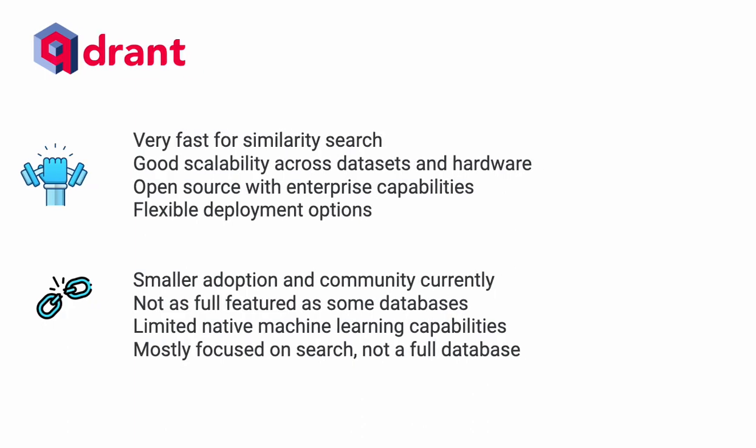The last one is Qdrant — Q-D-R-A-N-T — an open source platform. It's definitely fast for similarity search and has very good scalability across datasets and hardware. It's open source with a strong community and good enterprise support, with flexible deployment options. On the downside, it has small community adoption, is not as full-featured as some of the other databases discussed, has limited native machine learning support, and is mostly focused on search rather than being a full database supporting multiple use cases. It's essentially a fast search engine for vectors.